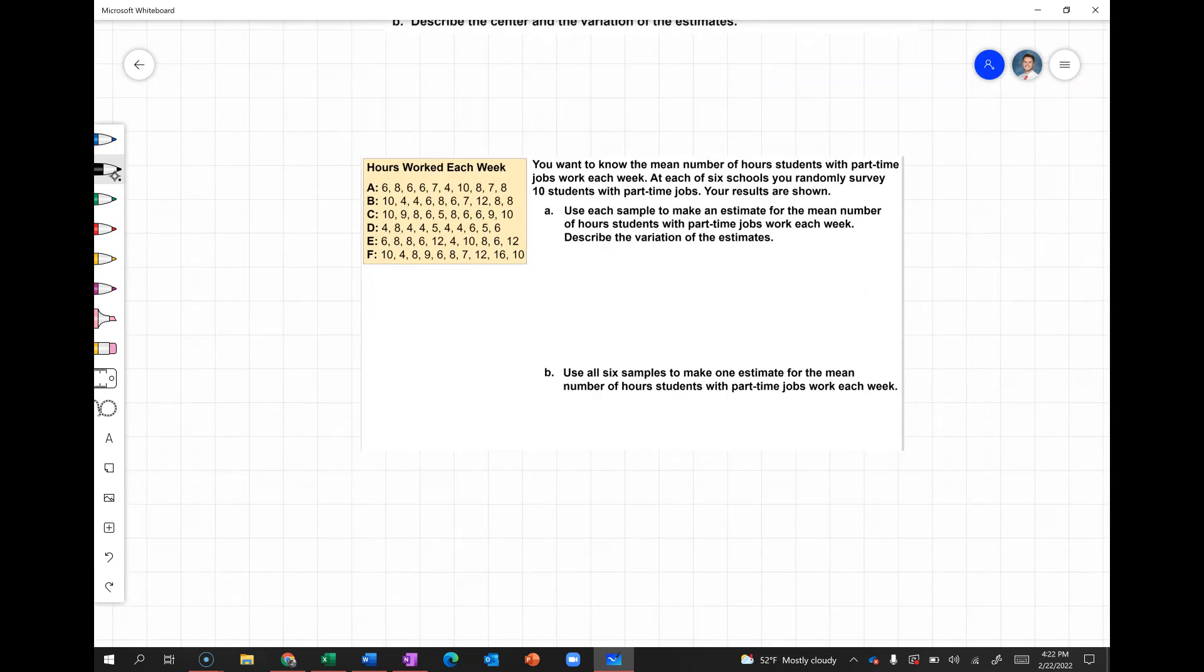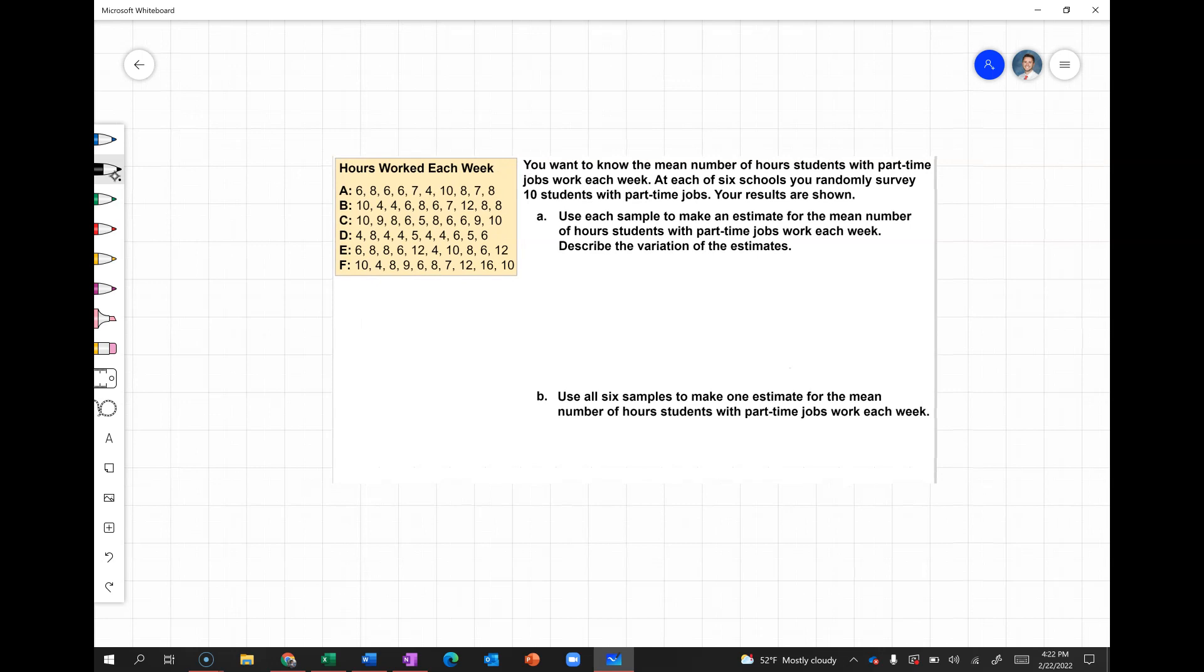You want to know the mean number of hours students with part-time jobs work each week. At each of six different schools, you randomly survey 10 students who have part-time jobs. Your results are shown. Schools are labeled A through F, and the answers that different students gave are listed next to those. Part A says use each sample to make an estimate for the mean number of hours students with part-time jobs work each week.